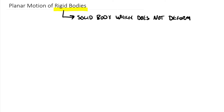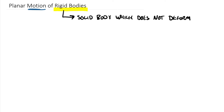We are back into a motion chapter, and we're going to repeat the same topics. We're going to talk about motion of rigid bodies, Newtonian kinetics of rigid bodies, work-energy of rigid bodies, and impulse-momentum of rigid bodies — and that's going to be it for dynamics. Basically a repeat of the same topics we had for particles, now with rigid bodies.